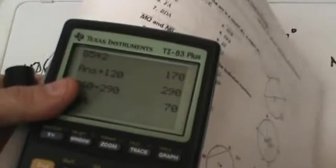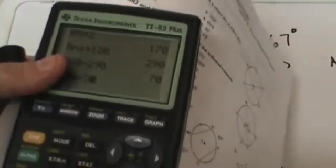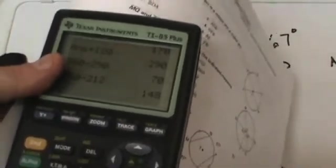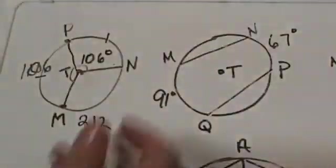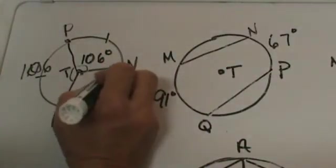MN would just be 360 minus 212, which would be 148. That is what MN is on this one.